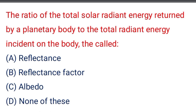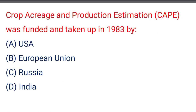Next question: the ratio of the total solar radiant energy returned by a planetary body to the total radiant energy incident on the body is called — option A: reflectance, option B: reflectance factor, option C: albedo, option D: none of the above. The correct answer is option C: albedo.